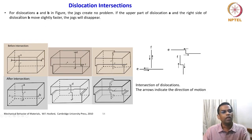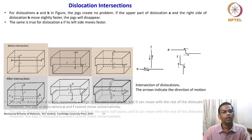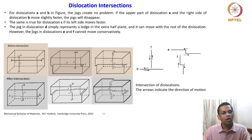For dislocations A and B, the jogs create no problem. If the upper part of dislocation A and the right side of dislocation B moves slightly faster, the jogs will disappear. The same is true for dislocation C — if its left side moves faster, it will disappear. The jog in dislocation D simply represents a ledge in the extra half plane and it can move with the rest of the dislocation.